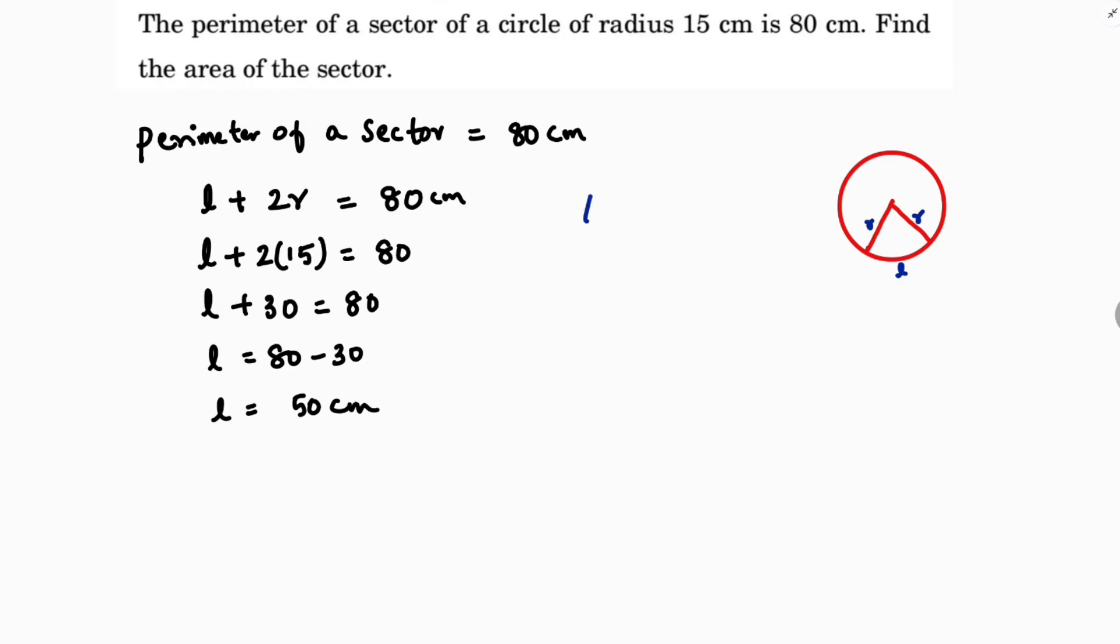So I need to find the area of sector. As I have the length, I'll use the formula LR by 2. So length of an arc is 50, radius is 15, and by 2.